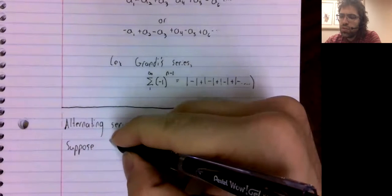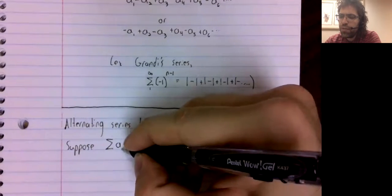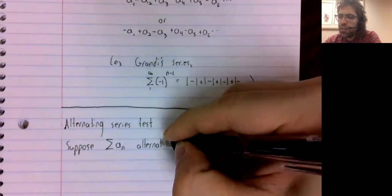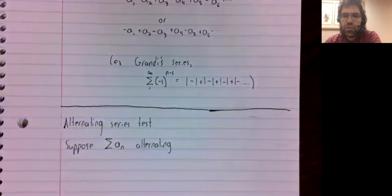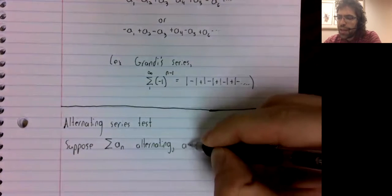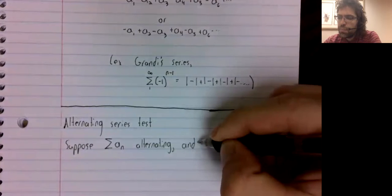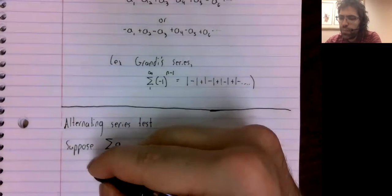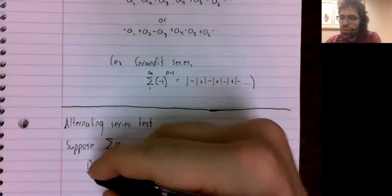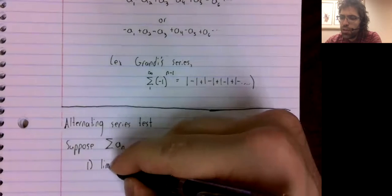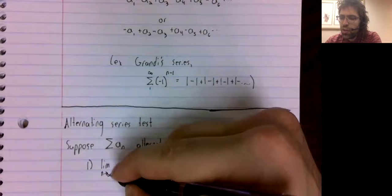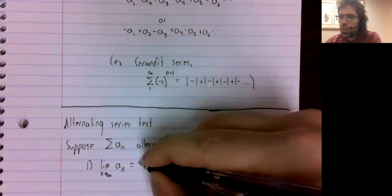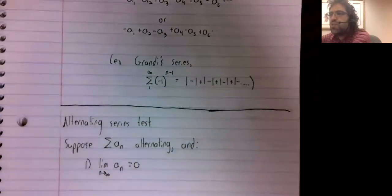Suppose we have an alternating series and two conditions are satisfied. First, the limit as n goes to infinity of these terms is zero.